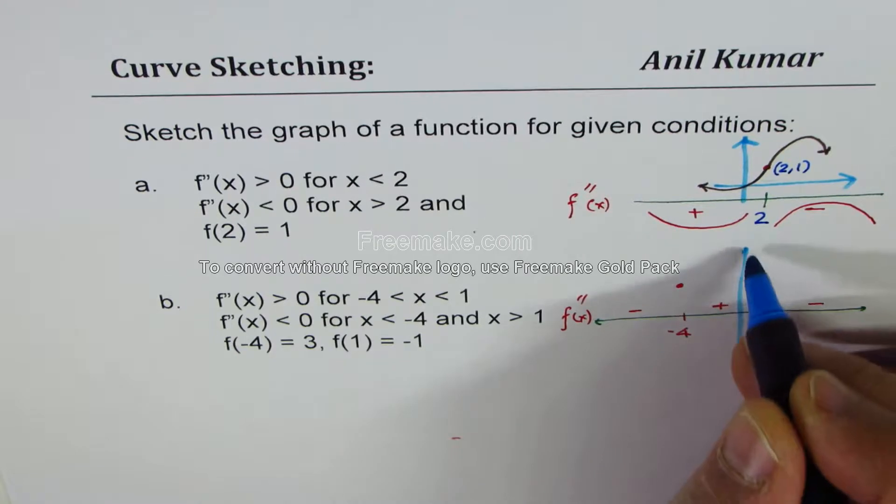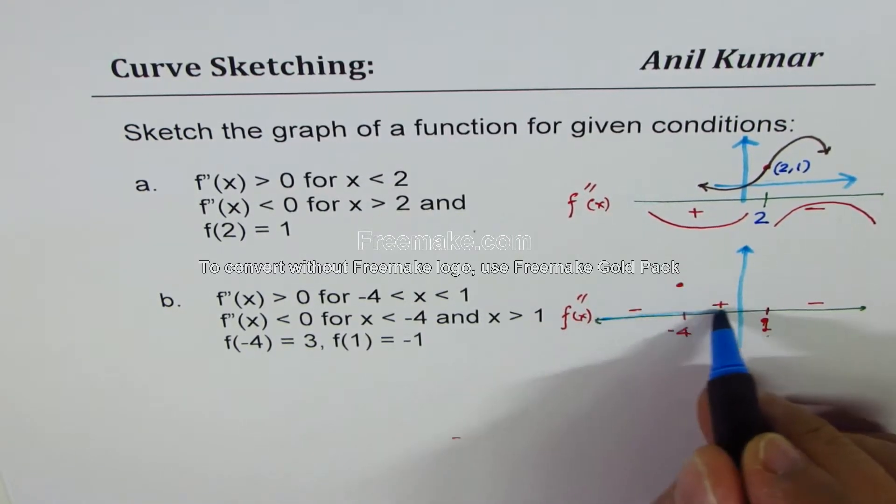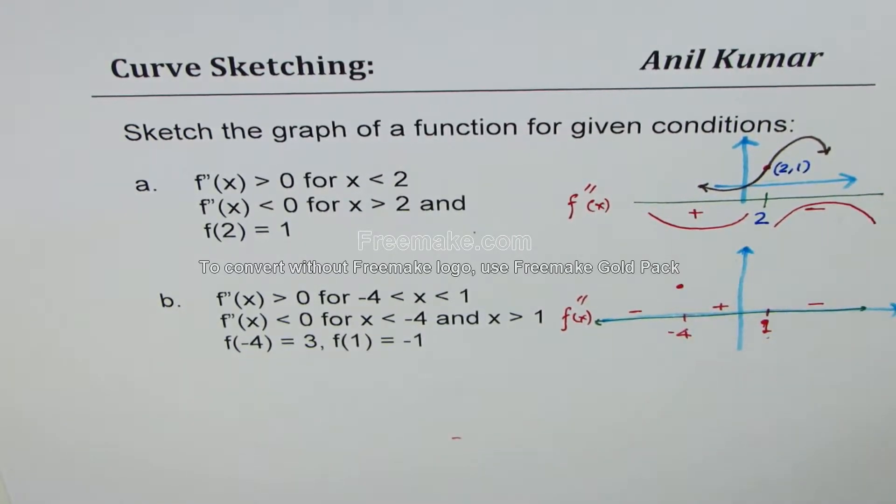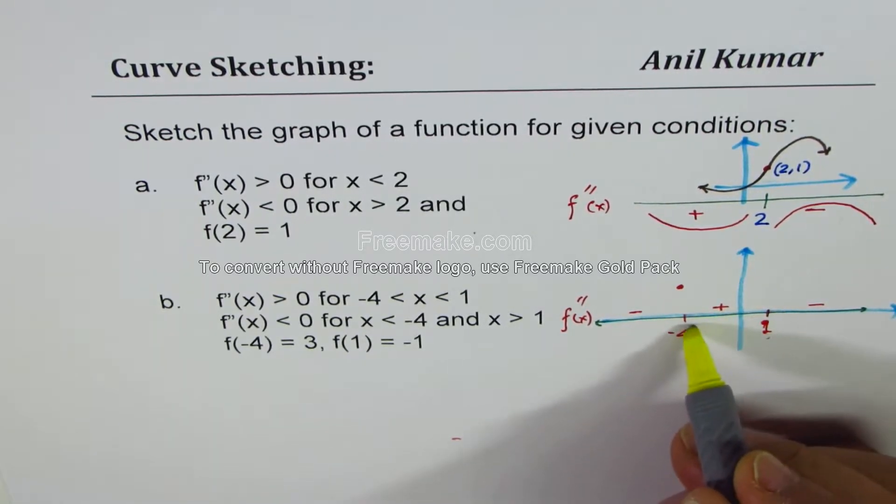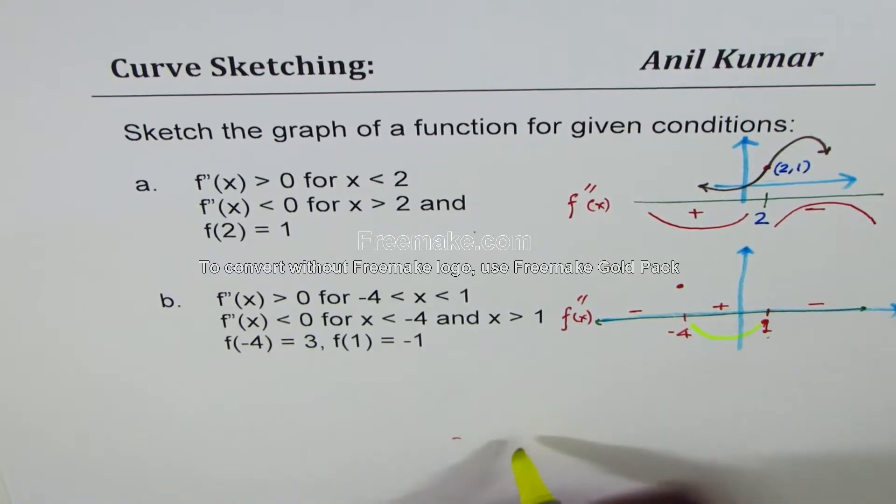So let me sketch the axis here. So this is what we are assuming. Now, from the analysis, it is very clear that the graph of the function is concave up in this portion and concave down in these two portions.